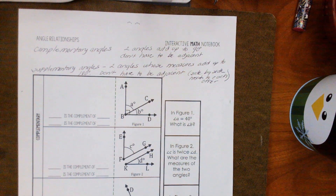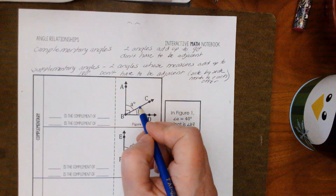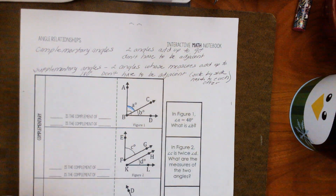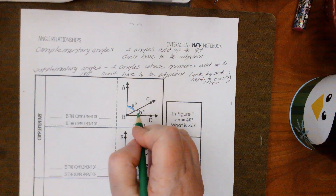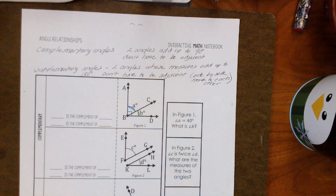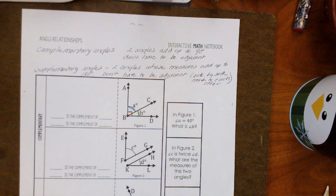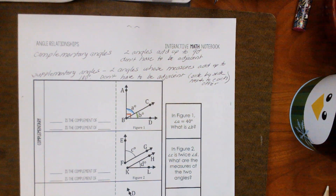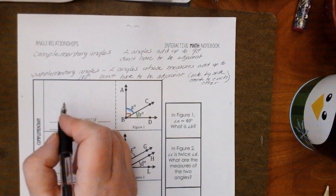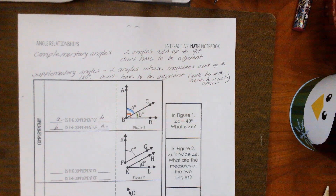Now, we know that definition, so when we look at this, we're going to say the angle of A is a complement of B, because when you add these up — and we know that a right angle is 90 degrees — they equal 90 degrees. So A is the complement of B, and B is the complement of A.